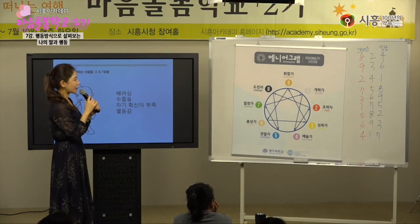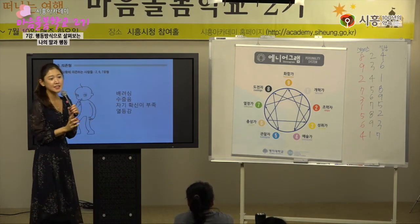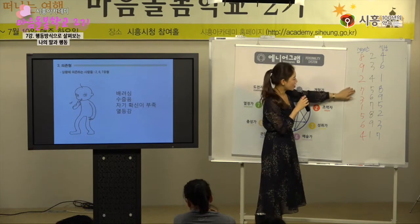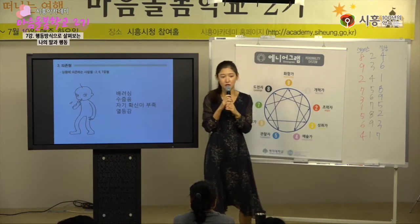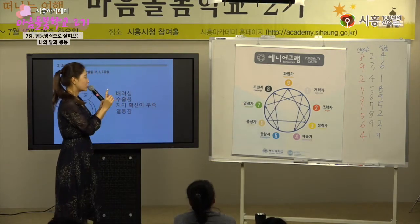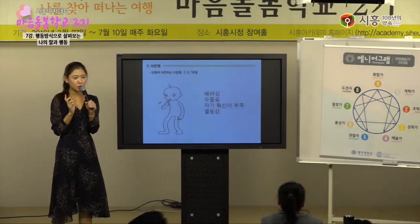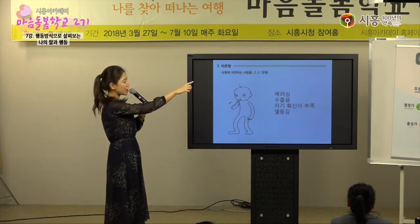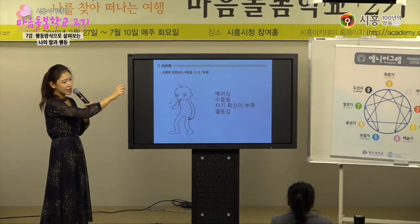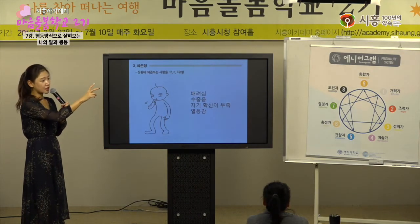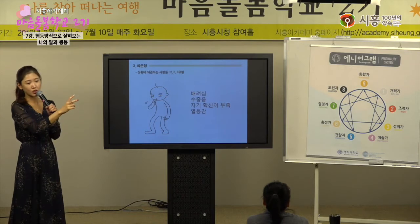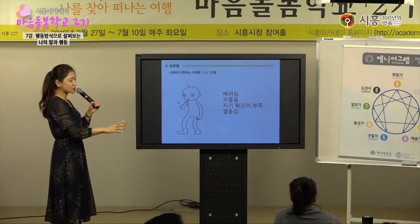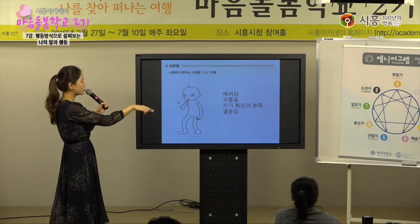우리가 만약에 검사지를 했다, 내가 유형을 찾았다 해서 1에서 9 중에 하나를 찾았겠죠. 하나를 찾았는데 내가 정말 내 심리정서 상태가 긴장점에 있을 때, 스트레스 상황일 때 이 유형의 불건강한 모습이랑도 일치를 해야 된다는 거예요. 내가 타고난 행동방식이 있는데 예를 들어서 나는 공격형을 타고났는데 왜 의존이랑 움츠림을 같이 쓰느냐, 그 흐름이 화살표랑 연관이 있어요.